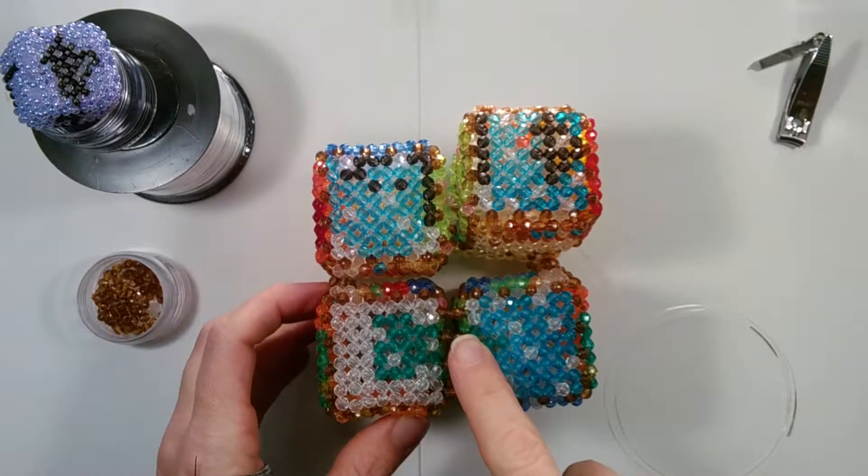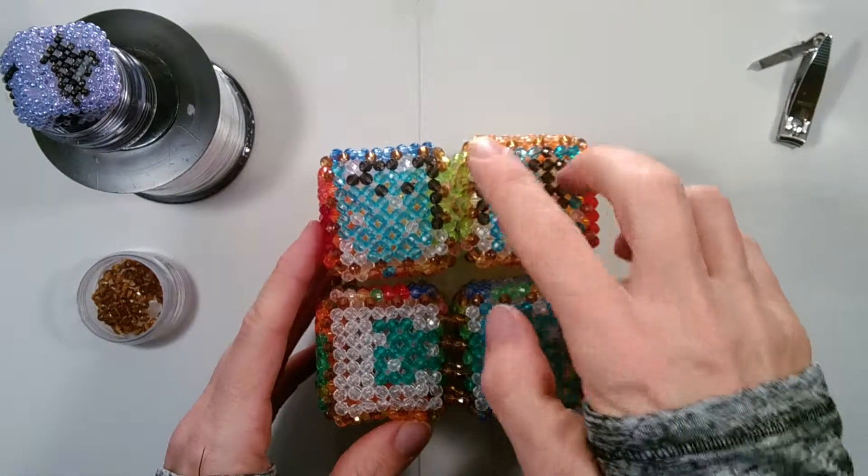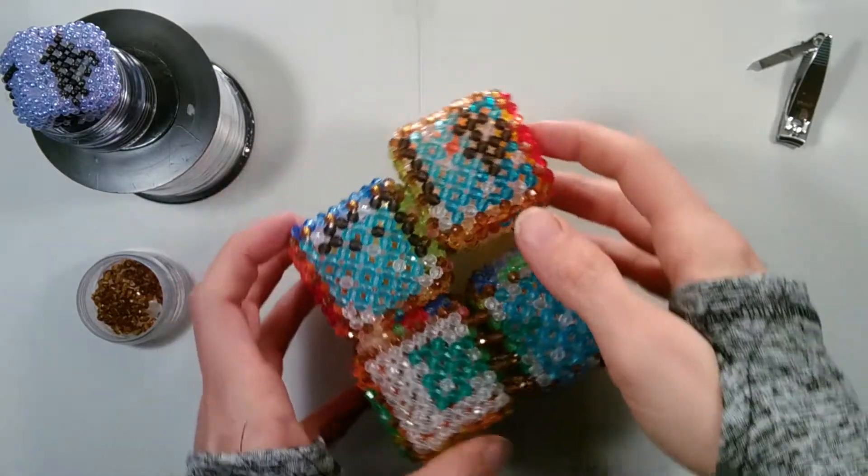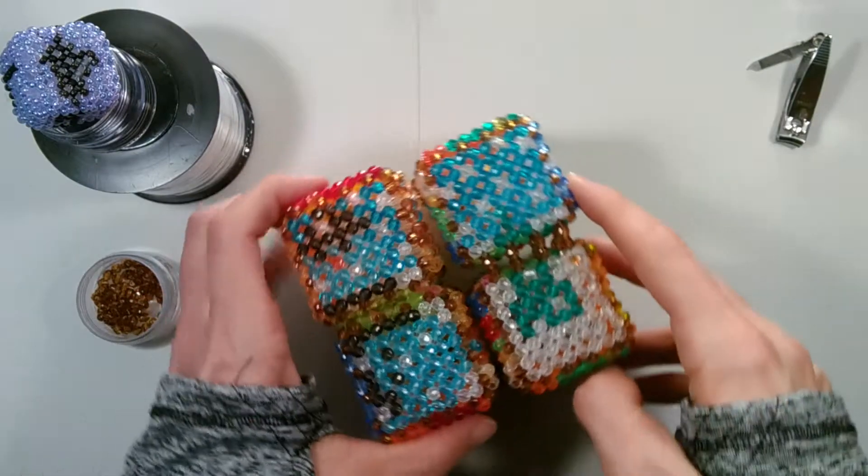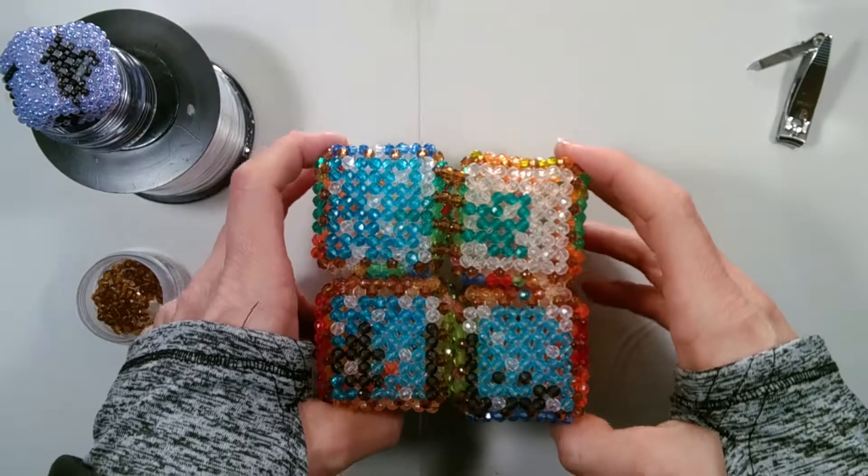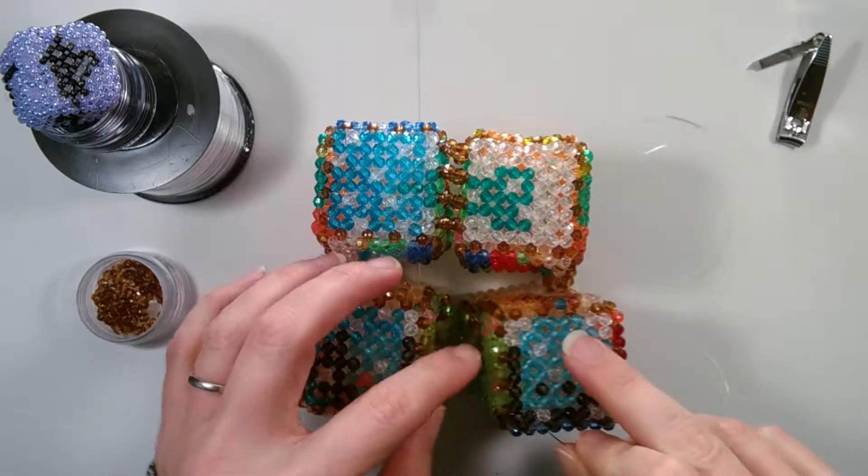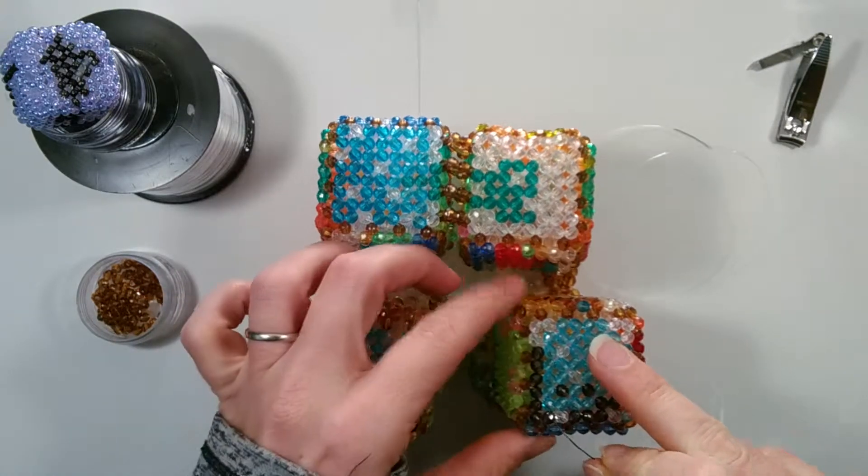We added the seventh hinge in the last video and we're now going to add the eighth hinge. So we'll turn our piece and then we'll take our string and we will go through the first connection bead.